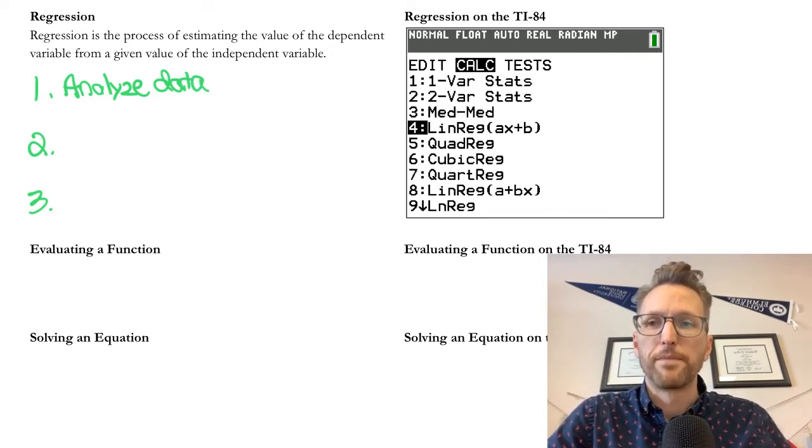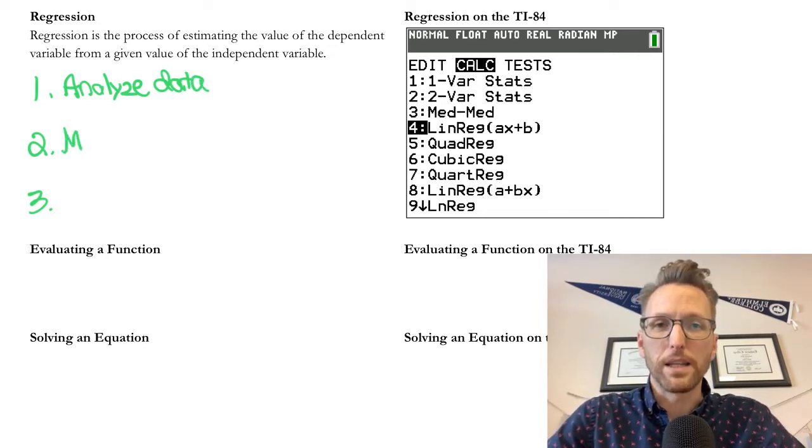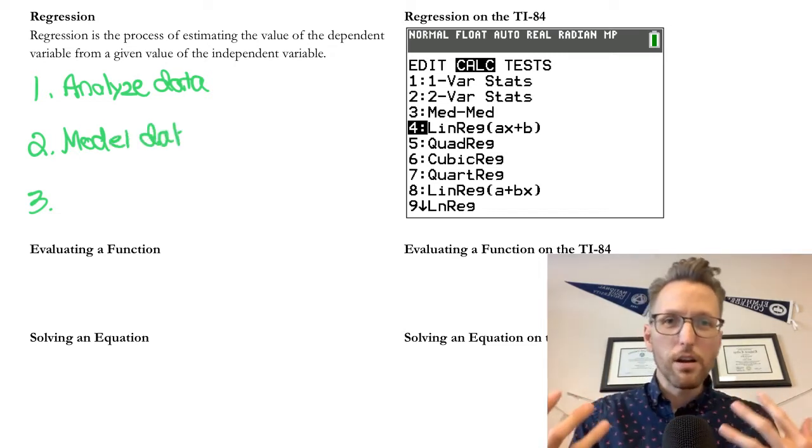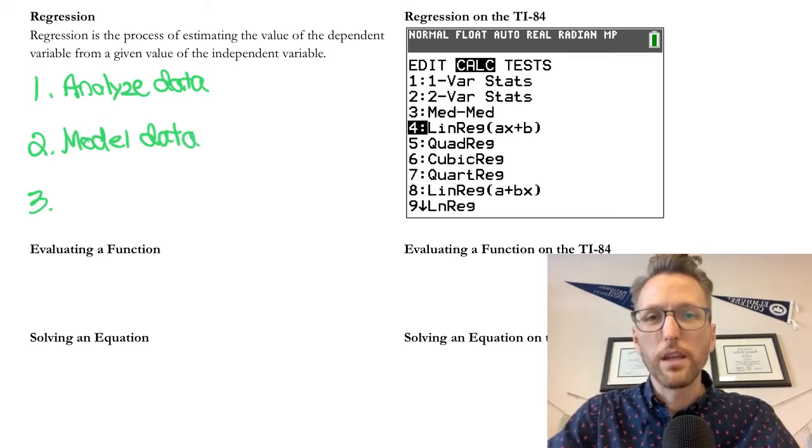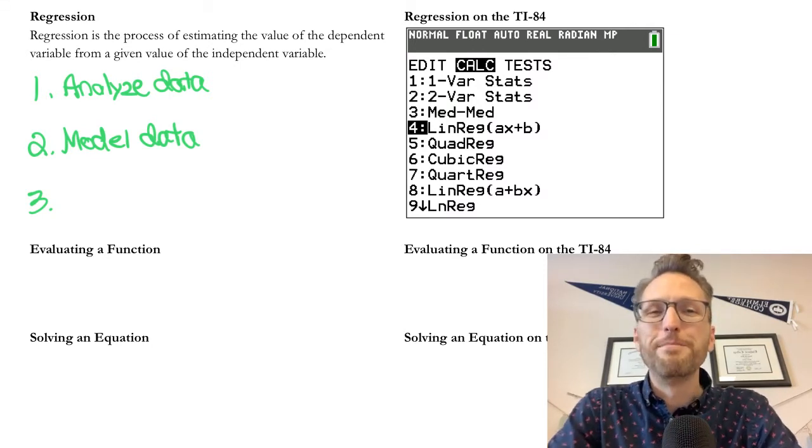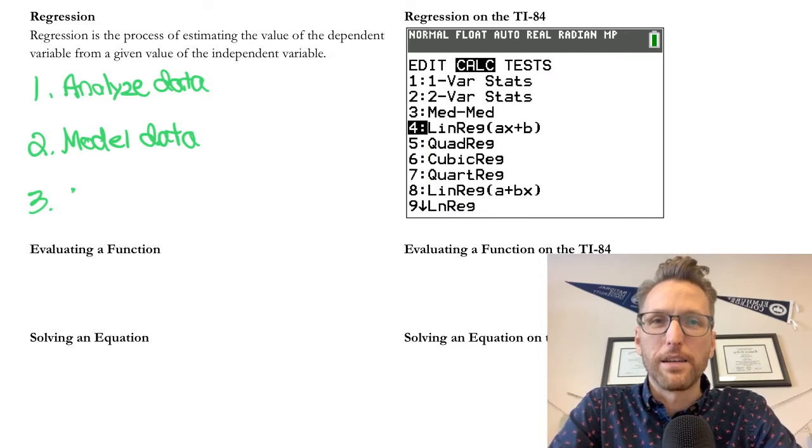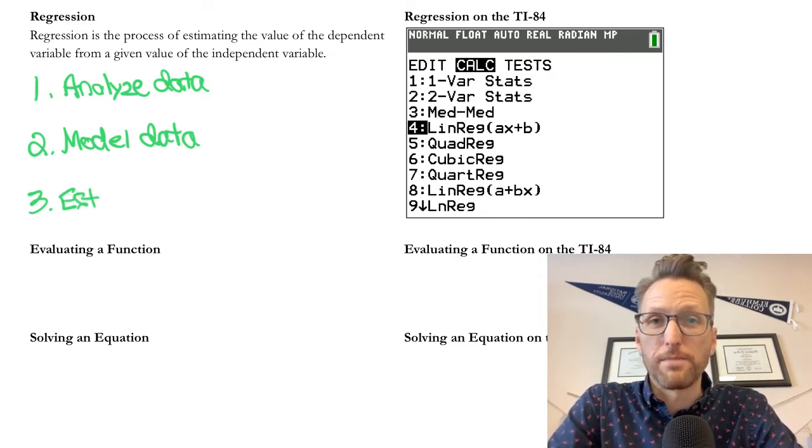Now, what that means is that we're doing some estimating and really the three step process of regression includes two things that are not regression first. Step one is analyzing data. So we have our data from a table and we're just checking it out, seeing what it's all about. Step two is modeling the data. So making sure that that data is represented by a good model, a good equation, a good function.